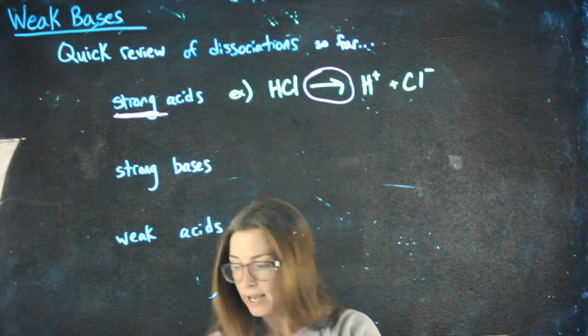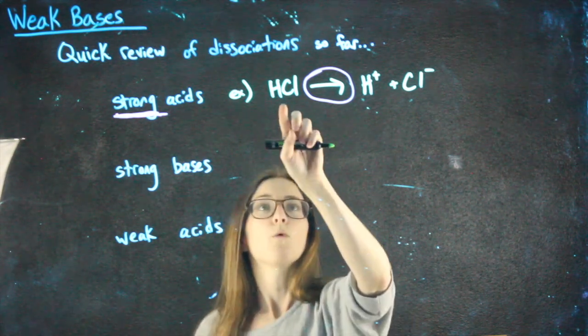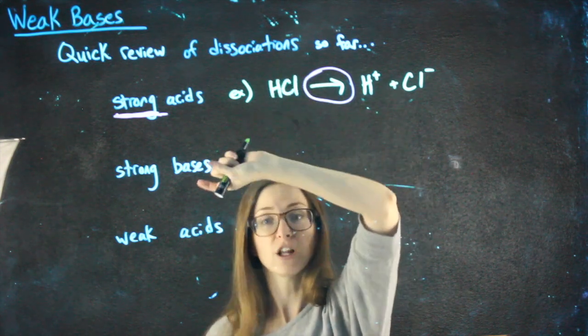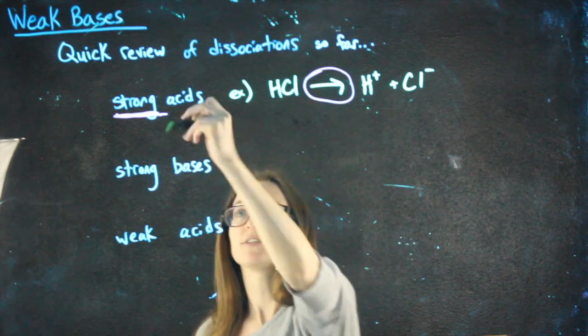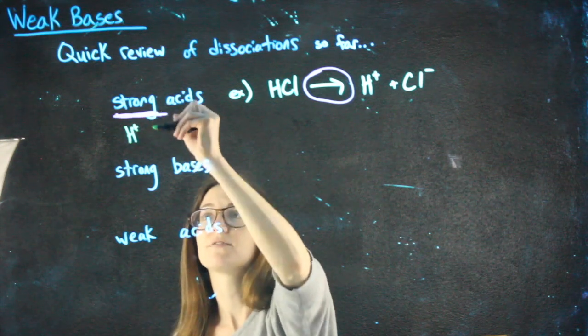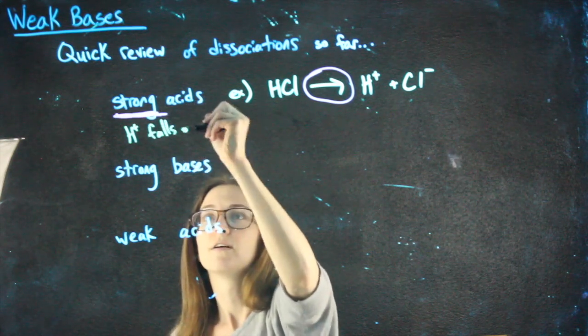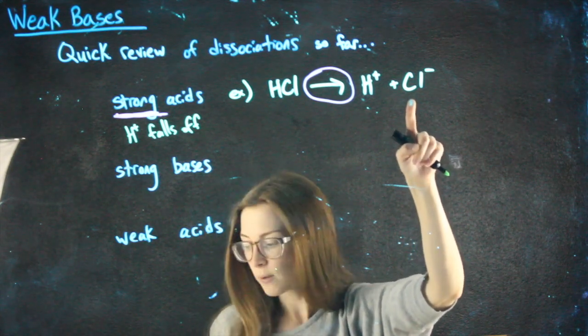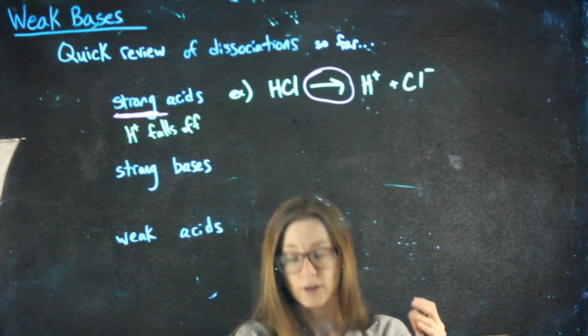Another thing that might be helpful is describing it. What we did here is we let the H plus fall off. So anytime we have a strong acid, the H plus falls off. Everything else in this case was just Cl minus, but otherwise everything else would stay together as one other ion.